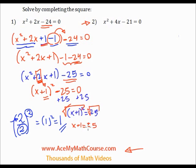Then, I'll subtract 1 from both sides of the equation. So, we get x equals negative 1 plus or minus 5. And, that will give us two answers. Negative 1 minus 5, negative 6. And, negative 1 plus 5, positive 4.